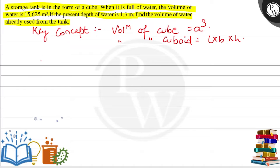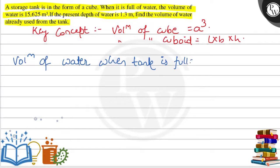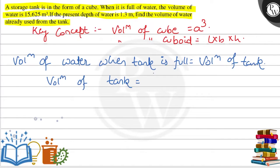So now we have to find what is the volume of water when the tank is full. Volume of water when the tank is full — so what will be the volume of tank? Volume of tank will be equal to 15.625 meter cube. So that will be equal to A cube is equal to 15.625.